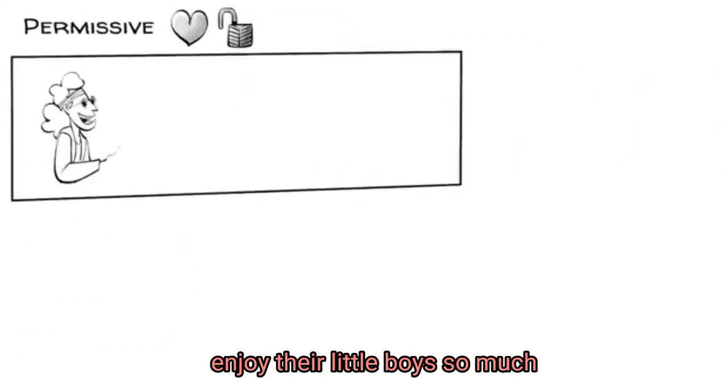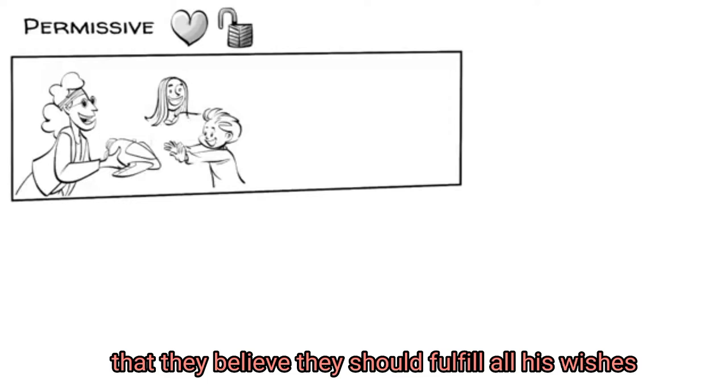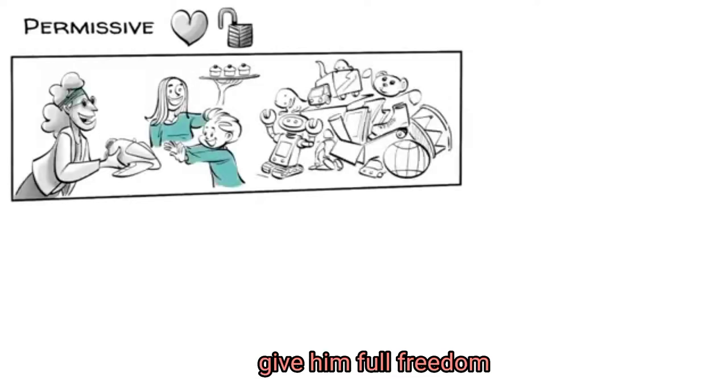Permissive parents, like those of Peter, enjoy their little boy so much that they believe they should fulfill all his wishes, give him full freedom, and never say no.